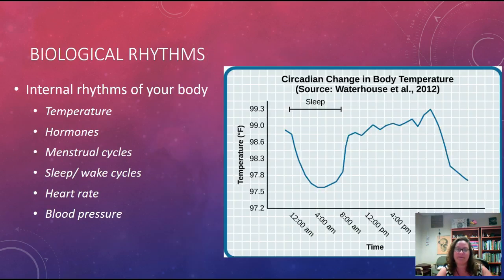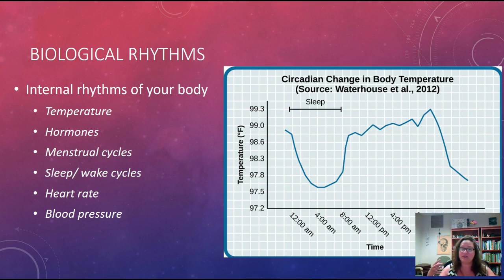We're going to spend some time talking about biological rhythms, which is important for our discussion of sleep. Our body has a lot of internal rhythms — as the day goes on we see changes in body temperature, hormone levels, menstrual cycles, and sleep-wake cycles. We also see circadian shifts in heart rate and blood pressure.